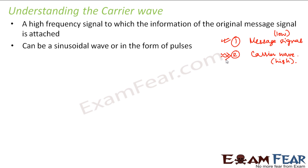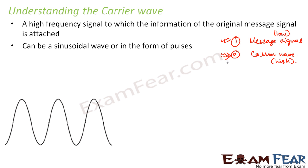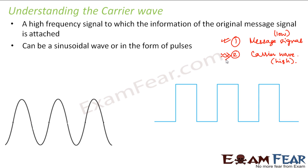This carrier wave can be a sinusoidal wave — that is, a sine wave — or it can be in the form of pulses. Pulses are similar to square waves and basically represent digital signals. So the carrier wave can be either of them — it can be a sine wave or it can be a pulse.